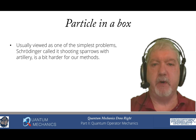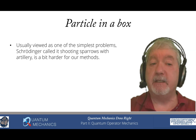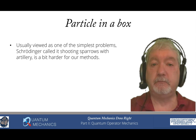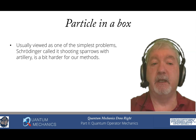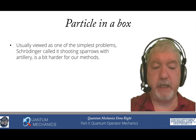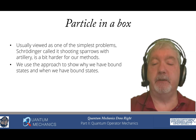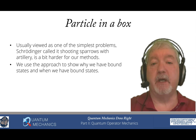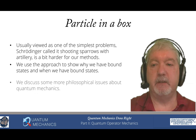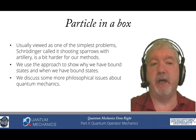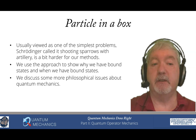Particle in a box in a conventional treatment is often viewed as one of the simplest problems, although it has lots of mathematical subtlety that is often swept under the rug and can come back to bite you. Here, with the factorization method, it's actually a pretty difficult problem — Schrödinger called it shooting sparrows with artillery. We go through in detail how we do it, which is why it appears so late in this section. We also have a discussion about why and when we have bound states for any particular potential, and discuss a number of philosophical issues about quantum mechanics related to measurement and what wave functions are.